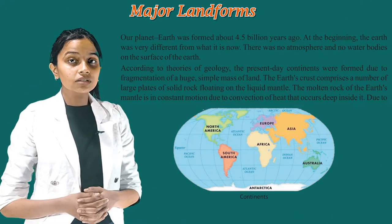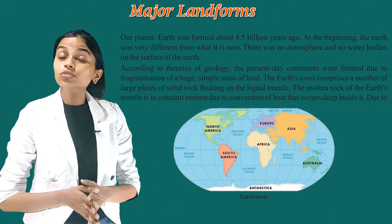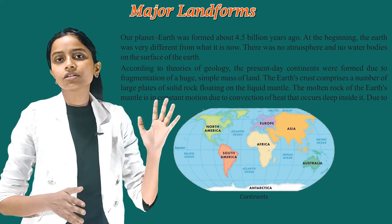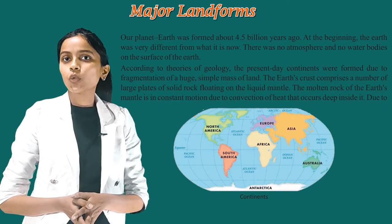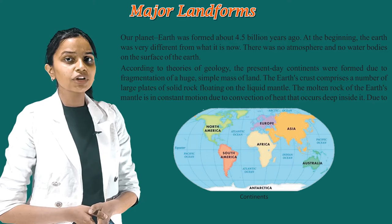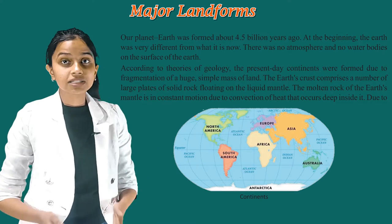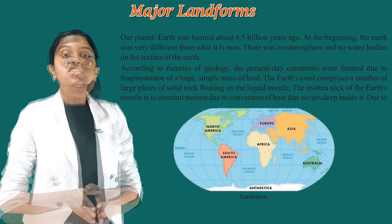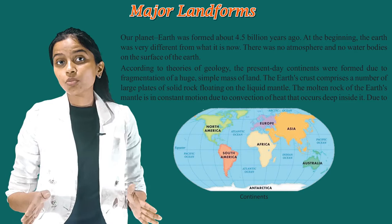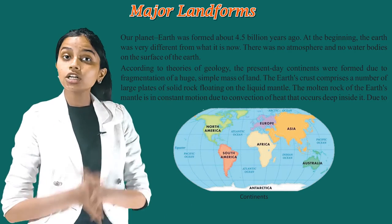Our planet Earth was formed about 4.5 billion years ago. At the beginning, the Earth was very different from what it is now. There was no atmosphere and no water bodies on the surface of the Earth.